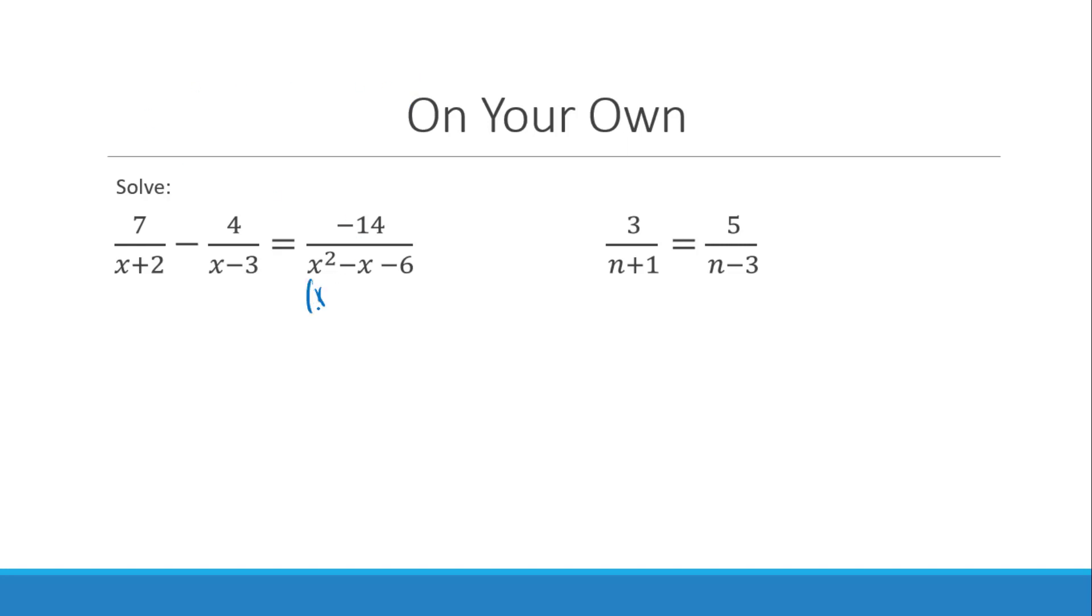So this first one, I'm going to go ahead and rewrite this. This is going to be factored in x minus 3 x plus 2. So my LCD here is going to be x minus 3 and then x plus 2. I'm going to multiply every little piece of my equation by x minus 3 x plus 2. The x plus 2s cancel. So 7 times x minus 3 would be 7x minus 21. These cancel. Negative 4 is going to be negative 4x and then minus 8. The whole thing cancels over here, so that's minus 14.